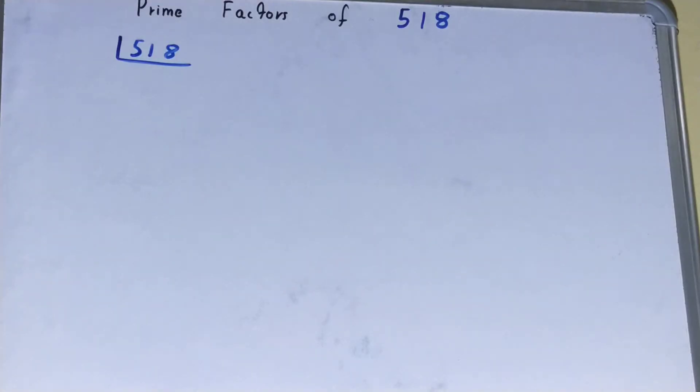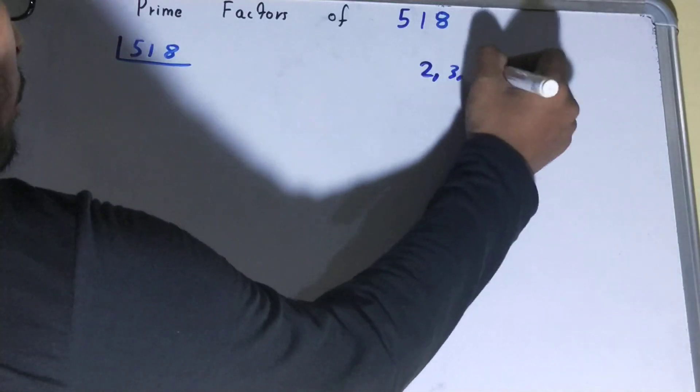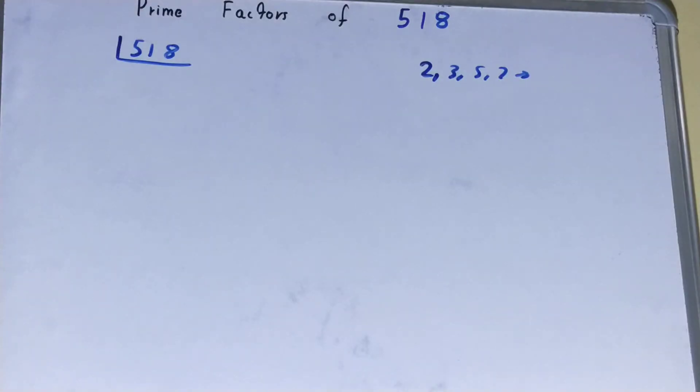...solving this any further, you must have an idea about what prime numbers are. Prime numbers are numbers that are divisible by 1 and themselves only, like 2, 3, 5, 7, and so on.